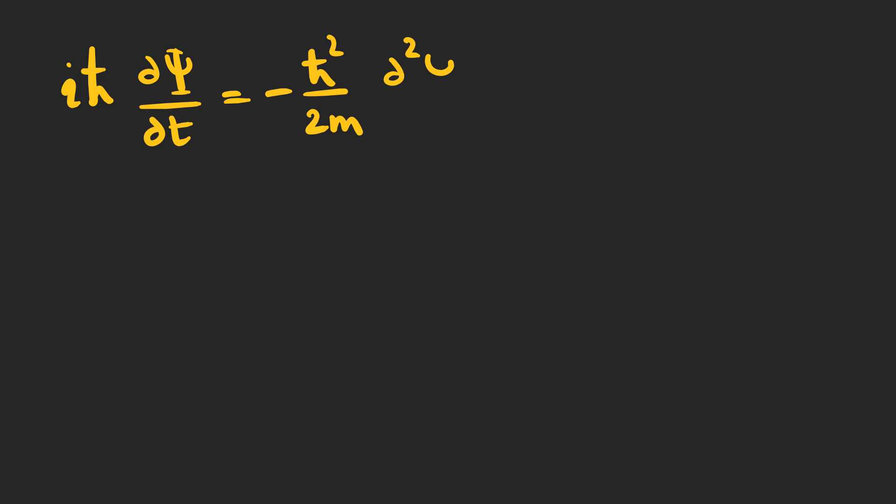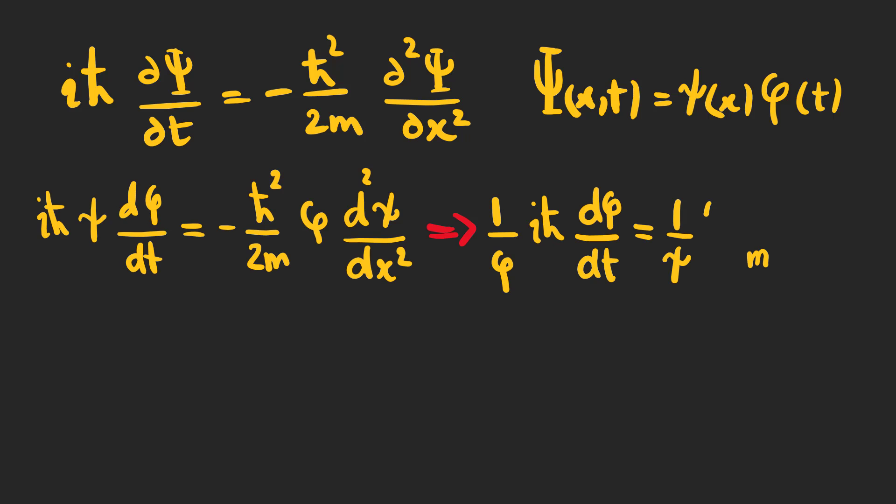To solve the Schrödinger equation for the free particle, we use the separation of variables method and use the new psi in the Schrödinger equation. It is equal to a constant value which we call E.